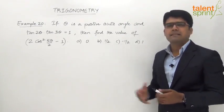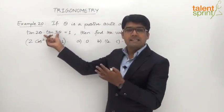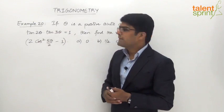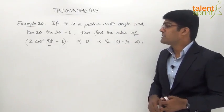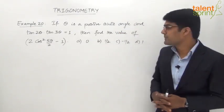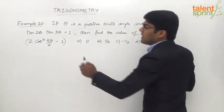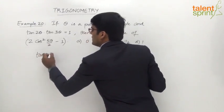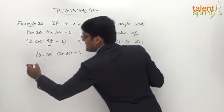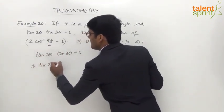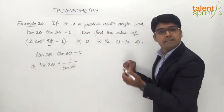Since tan 2 theta into tan 3 theta equals 1, trying to find the exact value of theta would be very complicated, and the expression 2 cos square 5 theta by 2 minus 1 also looks typical. From the equation, we can say tan 2 theta equals 1 by tan 3 theta, which is cot 3 theta.